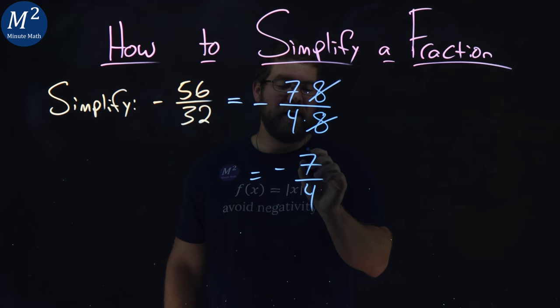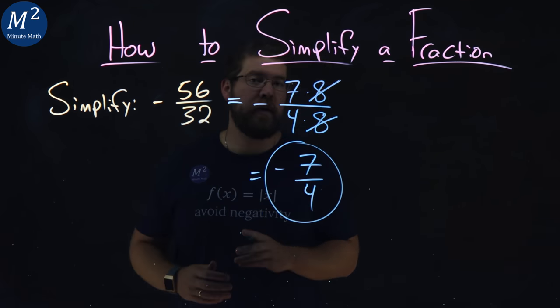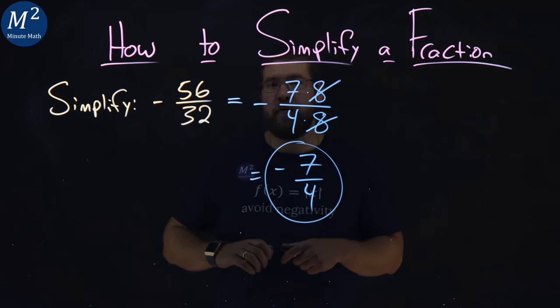That doesn't simplify anymore, and so we're done. Negative 56 over 32 simplifies to be a negative 7 over 4.